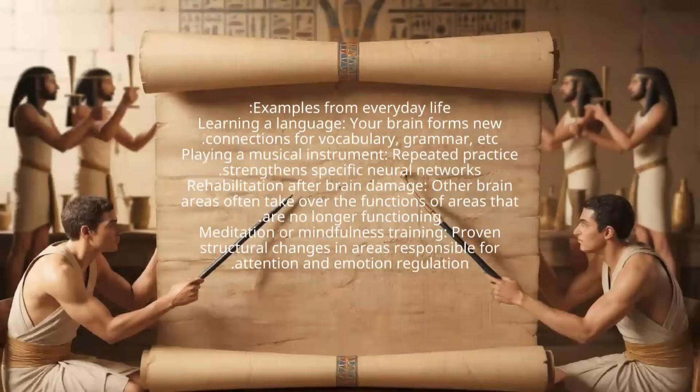Examples from everyday life: Learning a language, where your brain forms new connections for vocabulary, grammar, etc. Playing a musical instrument, where repeated practice strengthens specific neural networks. Rehabilitation after brain damage, where other brain areas often take over functions of areas no longer functioning. Meditation or mindfulness training shows proven structural changes in areas responsible for attention and emotion regulation.